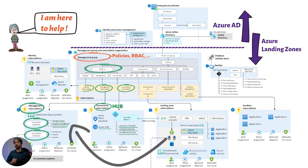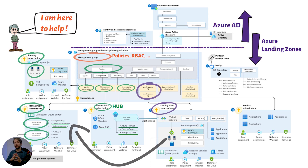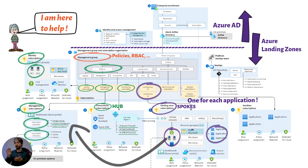We also have the identity subscription — a dedicated subscription primarily to host, for example, Windows Active Directory domain services if required. Looking now at the application landing zones: these are the spokes in the Azure deployment. Strictly following Microsoft best practices, each application should have its own separate spoke subscription, where all Azure resources for one application — such as virtual machines, app services, and function apps — are deployed. There is a peering connection from the spoke to the central hub connectivity subscription, allowing connectivity to other spokes and to on-premise.